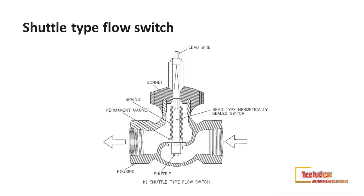The shuttle is displaced as the liquid flow increases to the actuation area. This shuttle operates the reed switch inside the unit stem. When displaced by fluid flow, the shuttle returns when the flow decreases and sits on the port seat.